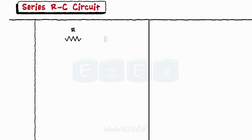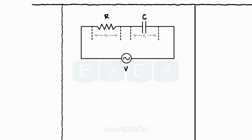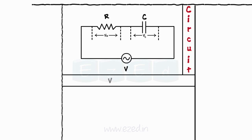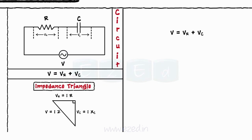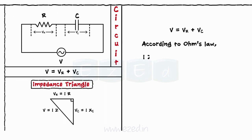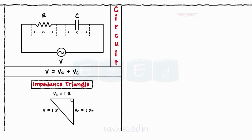When the resistance is connected in series with the capacitor across the AC supply, we get the series RC circuit. The total voltage V equals VR plus VC, and the voltage triangle is drawn as shown. Applying Ohm's law, IZ equals IR plus IXC. The impedance for the RC series circuit thus becomes Z equals R minus j·XC, and the phase angle phi equals tan inverse of XC upon R.